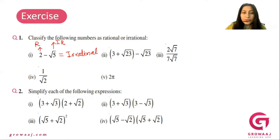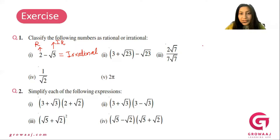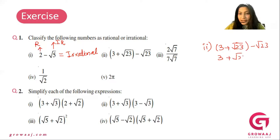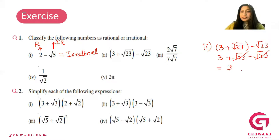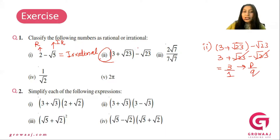Now, you have the expression 3 plus square root of 23 minus square root of 23. This expression can be simplified — the square root of 23 terms cancel each other — and we are left with a result of 3, which is 3 by 1, written as P by Q, which is rational.